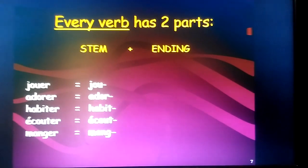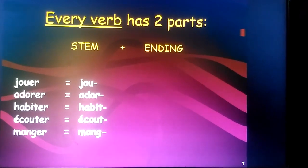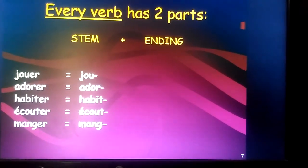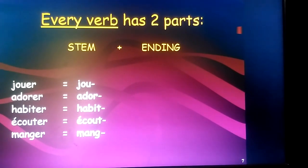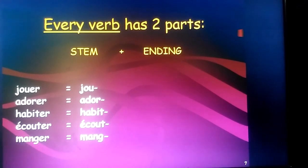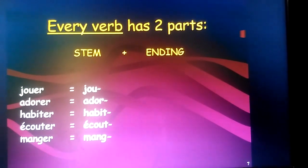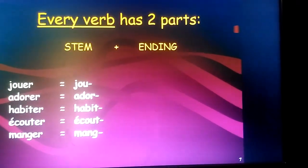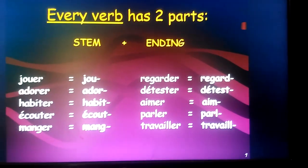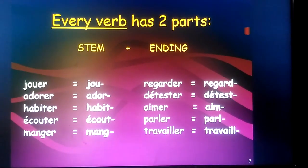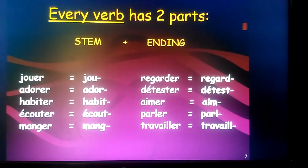So here we see the stem of a few verbs. Take 'jouer' — you remove the ER and the remaining part of the verb is your stem. In an infinitive verb, ER, IR, and RE are the endings, and when you remove that ending from the spelling of the word, the remaining part is nothing but the stem. Here you can see some stems where I remove the ER from the word and what remains is the stem of the verb.